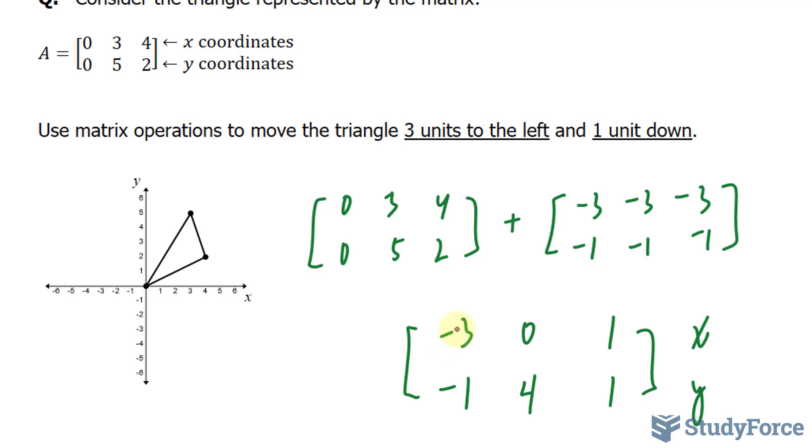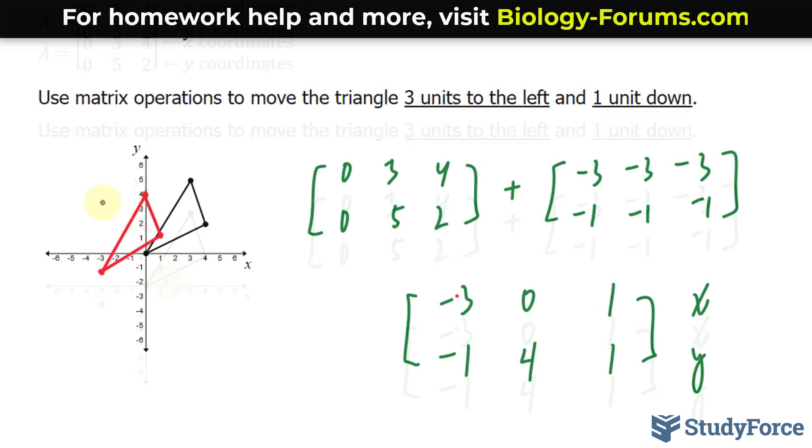We have negative 3 and negative 1. Negative 3 this way, negative 1 over here. 0 and positive 4, that's up here. And 1 and 1 is over here. Now that we've connected the points, this should be your completed triangle.